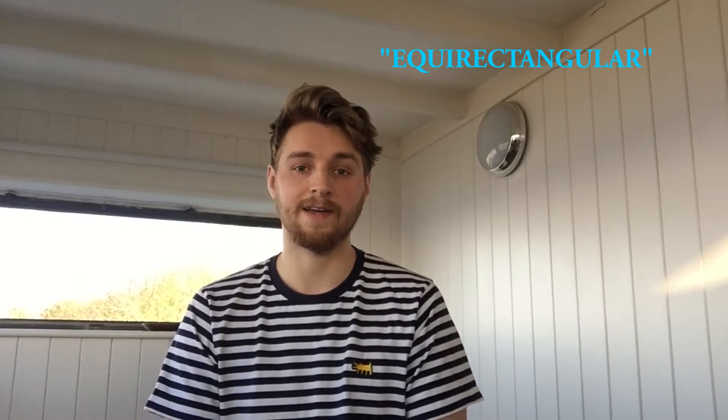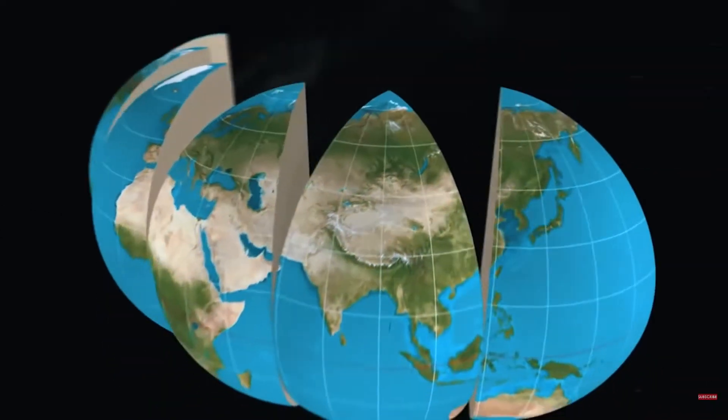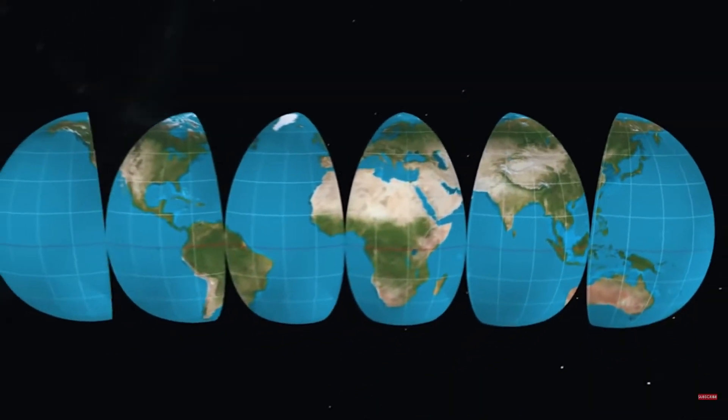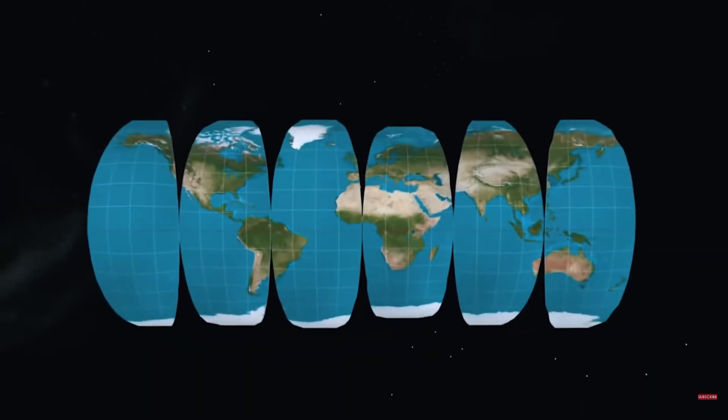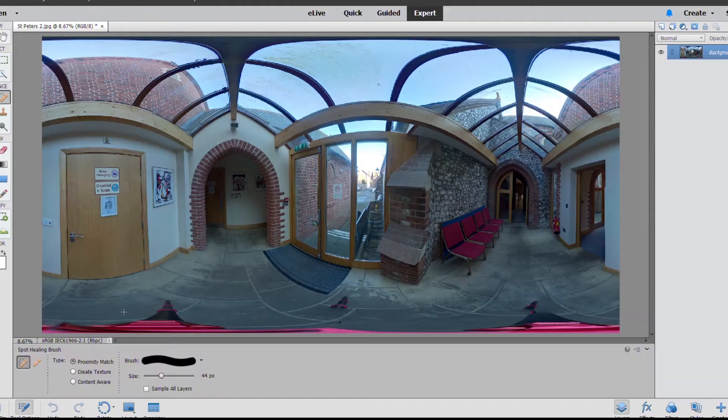So I'm going to edit the photo in its equirectangular format. An equirectangular image is a spherical image like the earth that is then distorted and flattened to create a flat image. Okay, let's jump into it.